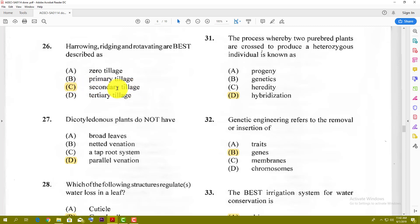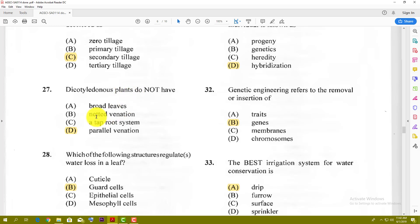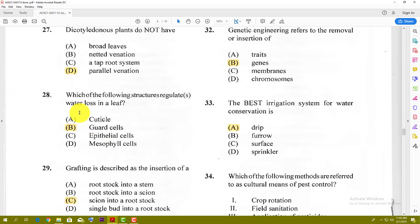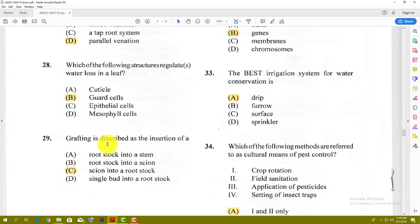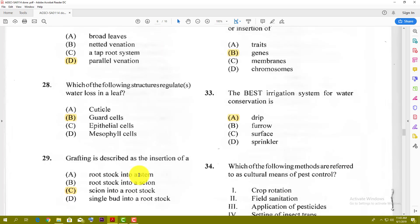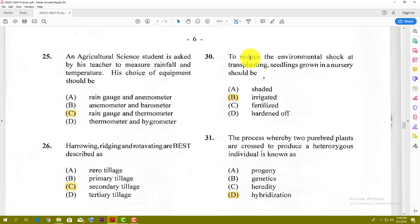Number 26: Harrowing, ridging, and rotavating are best described as secondary tillage. Secondary tillage is what you do to refine the soil after you would have done primary, which is to break it up and go deep and turn it over. Number 27: Dicotyledonous plants do not have parallel venation. They have netted ones, not parallel ones. Number 28: Which of the following structures regulates water loss in a leaf? The best answer is the guard cell. They open and close allowing water and gas exchange. Number 29: Grafting is described as the insertion of a scion into a rootstock. Number 30: To reduce the environmental shock at transplanting, seedlings grown in nursery should be irrigated. You give them water after you have transplanted them to relieve some of the shock.